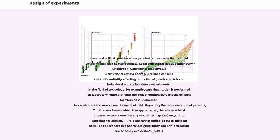Balancing constraints are views from the medical field. Regarding the randomization of patients, if no one knows which therapy is better, there is no ethical imperative to use one therapy or another. Regarding experimental design, it is clearly not ethical to place subjects at risk to collect data in a poorly designed study when the situation can be easily avoided.